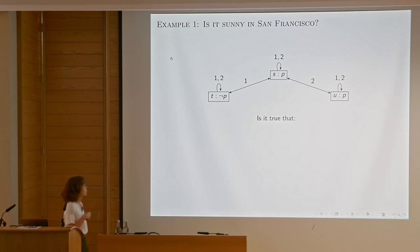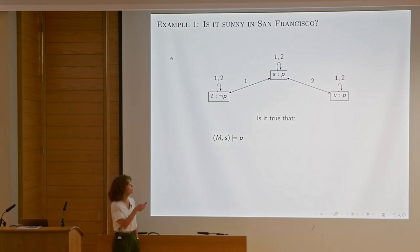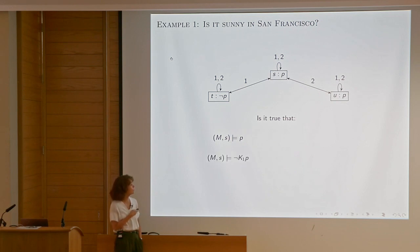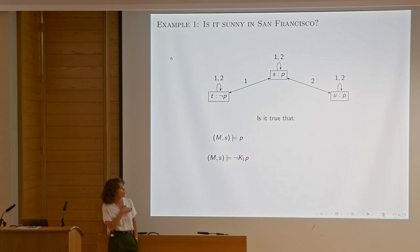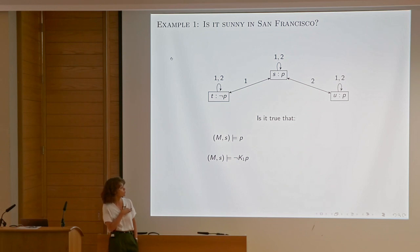We have reflexive arrows because we assume the relation to be reflexive. Let's model check this. Is P true at state s? Yes — P is simply made true. Is it true that agent one doesn't know it's sunny in San Francisco? Yes — in state s, agent one has an accessibility relation towards a world which makes this formula false, so she considers it possible that it's not sunny in San Francisco.